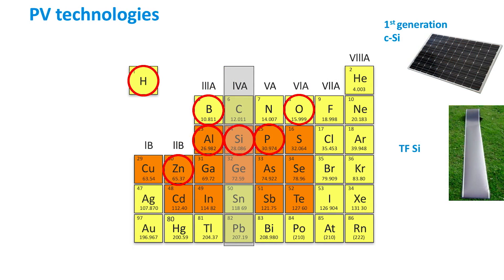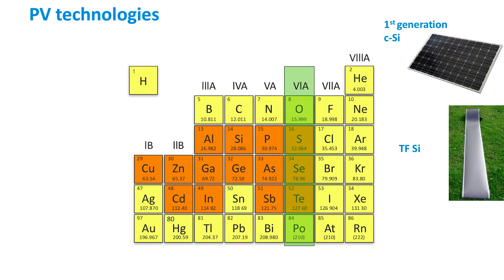Another class of thin film solar cells are the chalcogenide solar cells. The term chalcogenide refers to all chemical compounds consisting of at least one chalcogen anion from group 6 and at least one or more electropositive elements. The chalcogenides are a very large group and in this course we will focus on the two most important technologies.